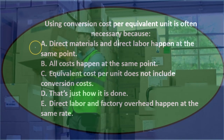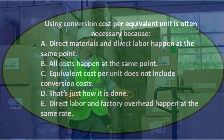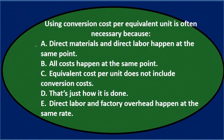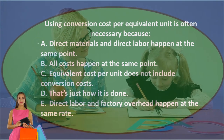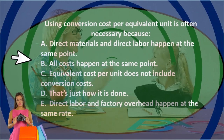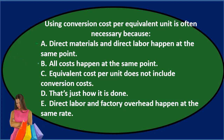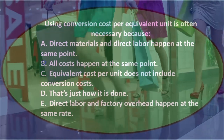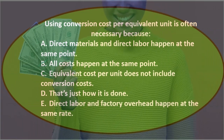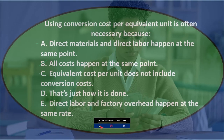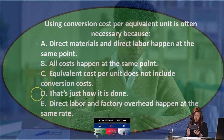Using conversion costs per equivalent unit is often necessary because — A: direct materials and direct labor happen at the same point. Well, we buy materials before the labor, so that's not quite right, but I'll keep it for now. B: all costs happen at the same point — that can't be right because materials come first, then labor, then overhead. It's a process cost system, so things happen sequentially.